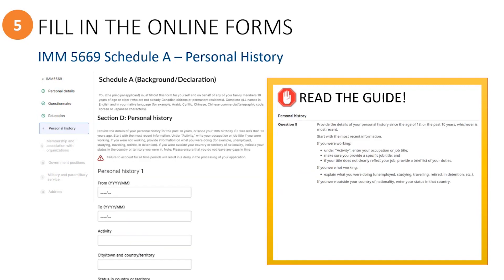The Personal History section is where you will provide information about what the refugee was doing over the past 10 years or since the age of 18 — for example, any employment history. You will start with the most recent information, such as what they're doing now. In the From section, enter the applicable year and month that the activity began, and under the To Date, enter the current year and month.